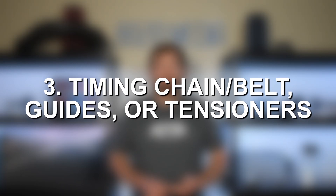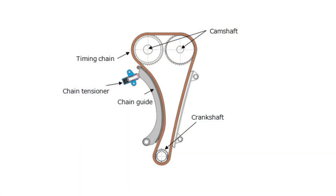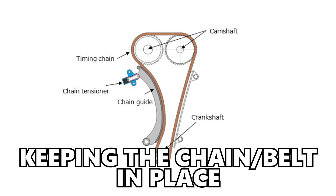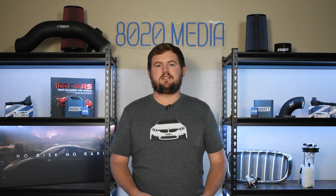Common cause number three is issues with the timing chain or timing belt guides or tensioners. The guides and tensioners are responsible for keeping the chain or belt in place and synced up with the appropriate teeth in the right location. Over time, if those guides or tensioners wear down, they may allow the timing chain to start slipping or skipping a couple teeth, which can trigger P0016 and indicate an issue with crankshaft and camshaft timing.